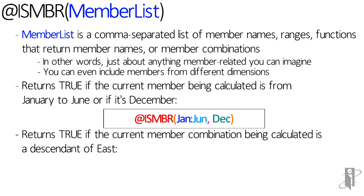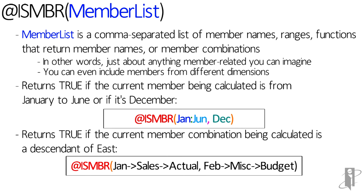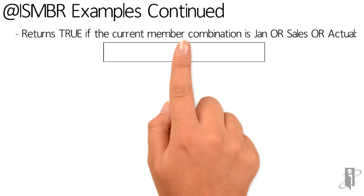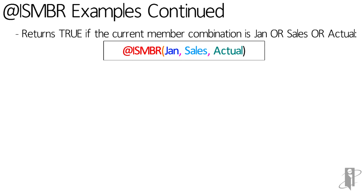I could say @isMember Jan colon June comma December. Or let's say I wanted to check two specific member combinations — Jan crossed in Sales crossed in Actuals, or Feb crossed in Miscellaneous crossed in Budget — in either of those cases it would return true. I could even check members from different dimensions and say isMember Jan comma Sales comma Actual. Be very careful: you might think this returns true only when it's January and Sales and Actual, but it won't. It's January regardless of account or scenario, or Sales regardless of month or scenario, or the Actual scenario regardless of month or account.